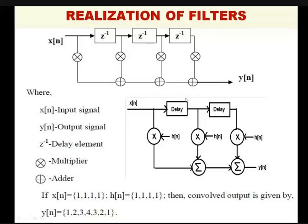So if x[n] has 4 samples and h[n] has 4 coefficients, the maximum possible filter output — the linear convolution output — will have 7 samples. Why? Because there will be only 7 overlaps. h[n] is constant, and x[n] is moving. There are only 4 overlaps at any time — it's like a sliding window. So there is a window concept here — it's very interesting.